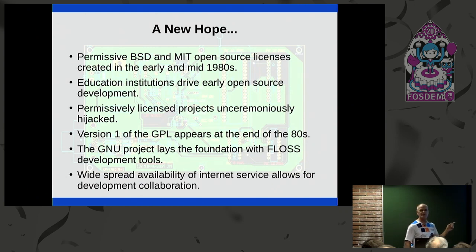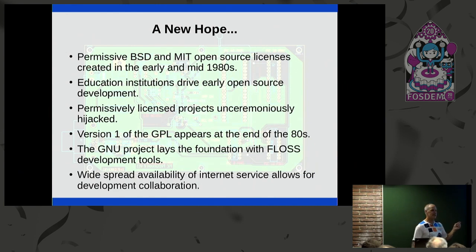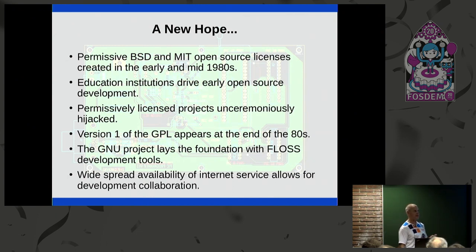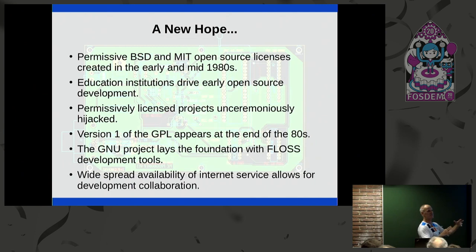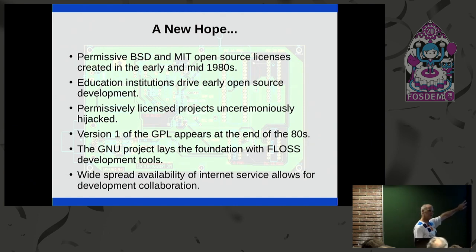Most of this was done at the university level — by educators and their staff. But there were a couple of big-time projects during this period that, because of the permissiveness of these licenses, were hijacked. Two projects come to mind: BSD sockets and Kerberos. The point of those two projects was to unify things — bring everybody together. But they were broken for competitive advantage. A group of people realized the spirit of those licenses — to make code freely available — wasn't being enforced.